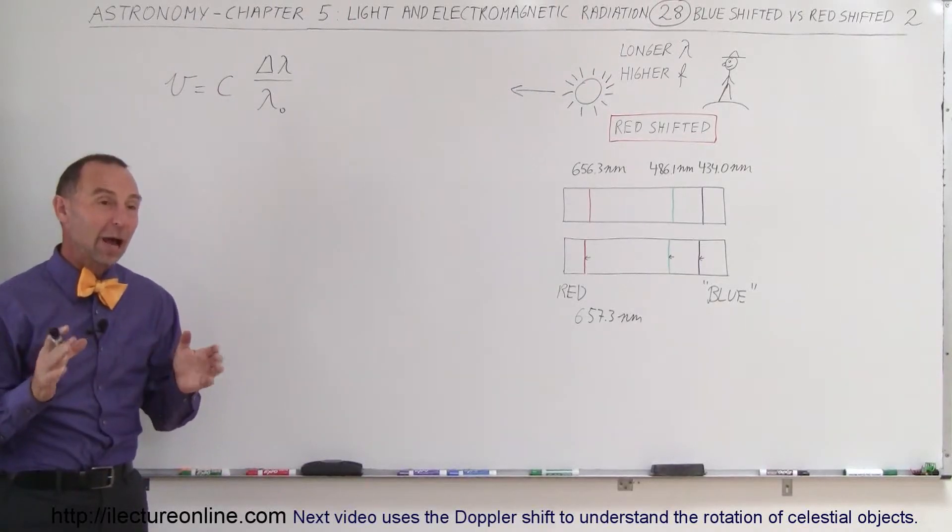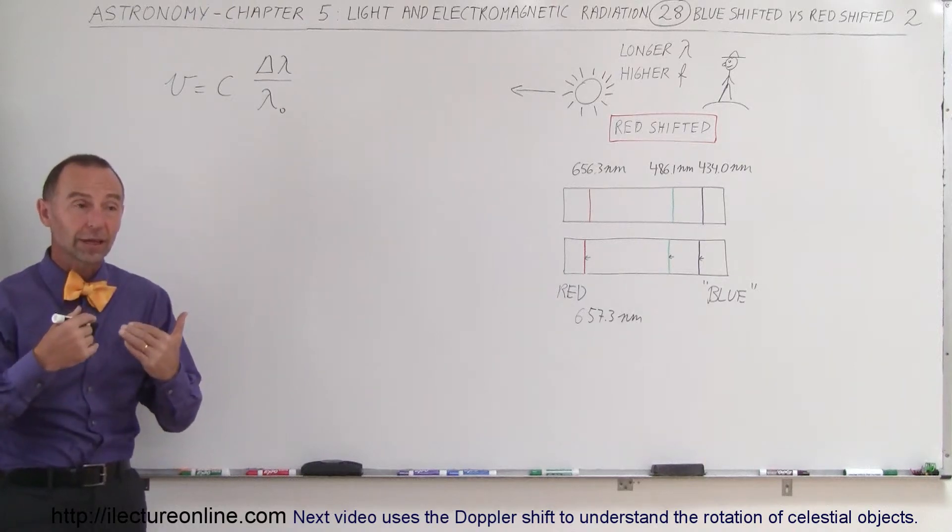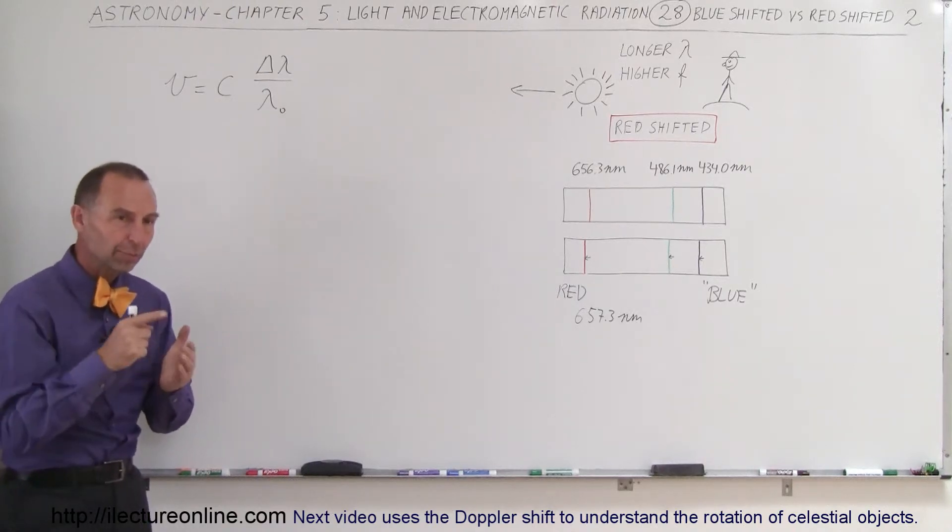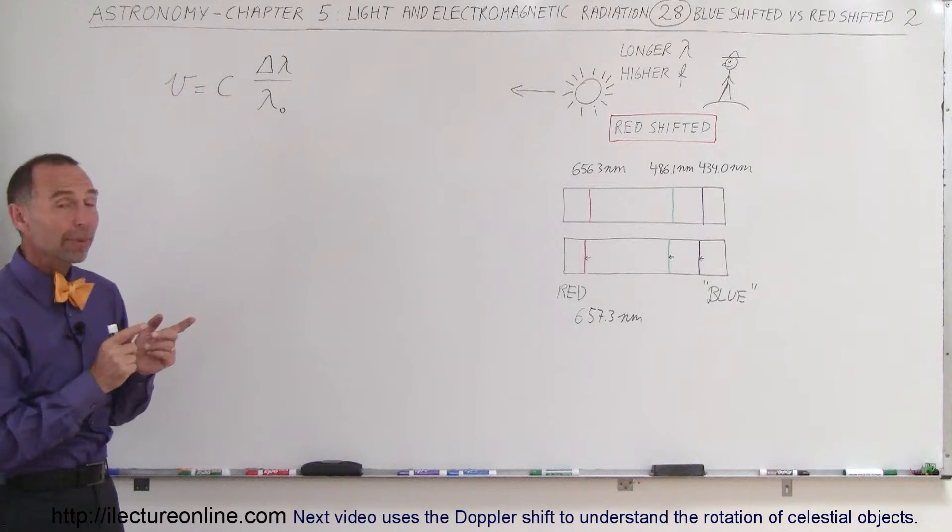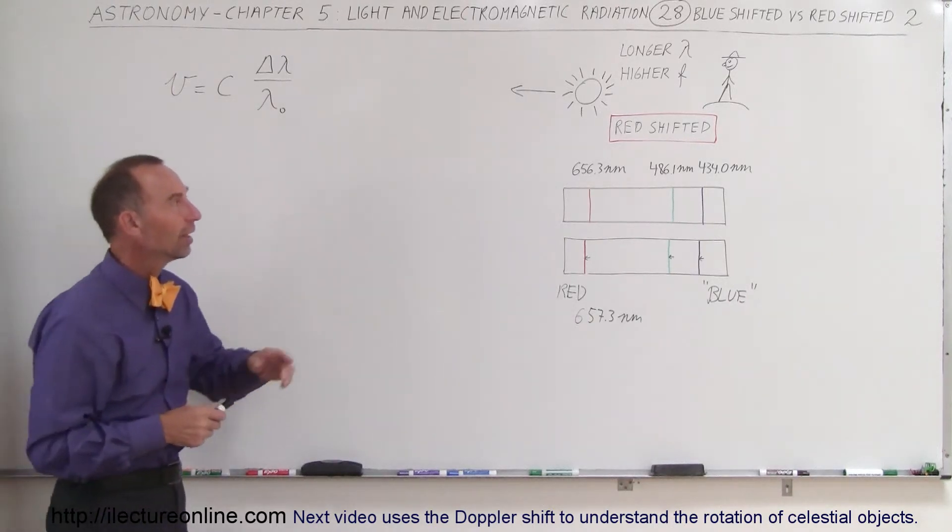Welcome to Electron Line. Now let's find out how we actually calculate the velocity of objects in space relative to us. Of course, it would be in the radial direction between them and us based upon the red shifting or blue shifting of the light coming towards us.